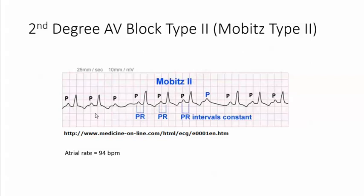The next thing I want to do is look at this QRS. It is wide — it's 0.16 seconds. Normal is less than 0.10 seconds.